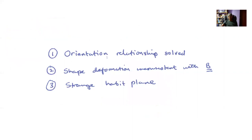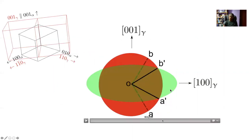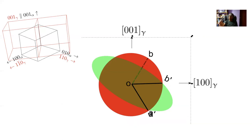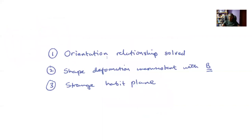The combination of the rigid body rotation and the Bain strain perfectly explains the irrational orientation relationship that we observe experimentally. The Bain orientation isn't the correct one, but once you've added the rigid body rotation, that accurately explains the observed orientation relationship, which is irrational — all because we need an invariant line in the interface. So we have solved the problem of the irrational orientation relationship. However, the shape deformation is inconsistent with the combination of the Bain strain and the rigid body rotation because that only leaves an invariant line, and we haven't explained the strange habit plane indices.